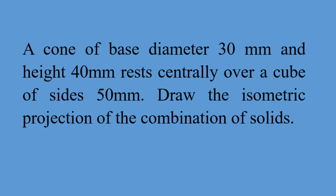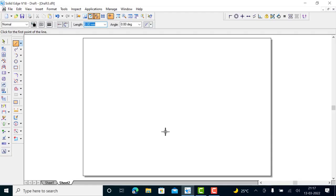In this video I will explain the isometric projection of a combination of solids consisting of a cone and a cube. In this case, a cone of base diameter 30 mm and height 40 mm rests centrally over a cube of side 50 mm. We have to draw the isometric projection of this combination of solids.